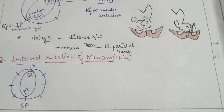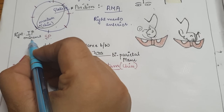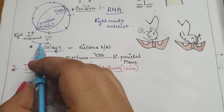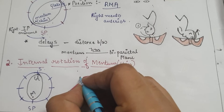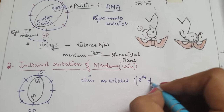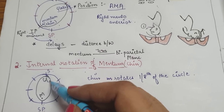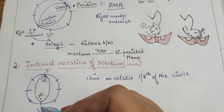Next is internal rotation of the mentum. After engagement, there is internal rotation in which the mentum rotates one-eighth of a circle to lie behind the symphysis pubis. After internal rotation, the chin comes into the anteroposterior diameter, lying behind the symphysis pubis.